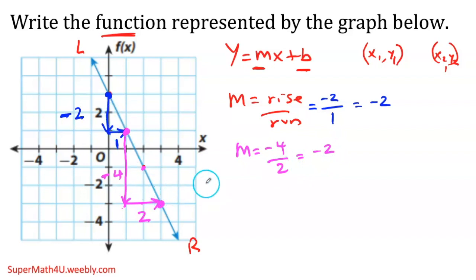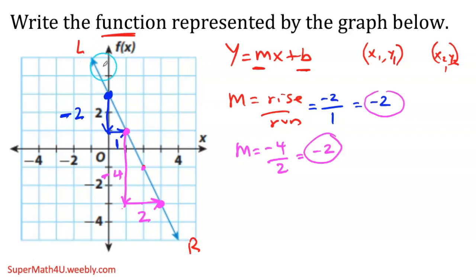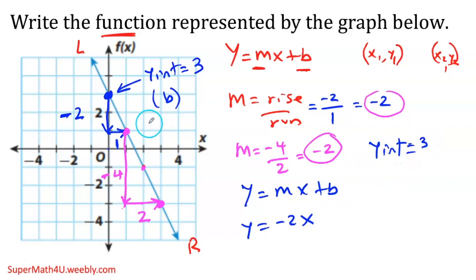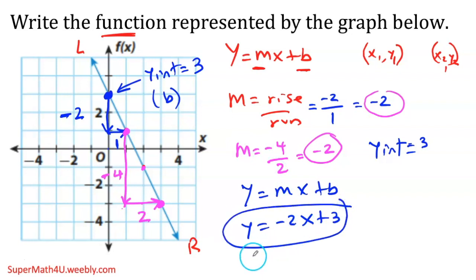The y-intercept is where the line intersects the y-axis, represented by the letter b. Counting up from zero: one, two, three — the y-intercept is three, which is above the x-axis, so it's positive. Writing the equation: y equals m — which is negative two — times x plus b, which is three. So the equation is y equals negative 2x plus 3.